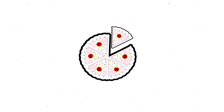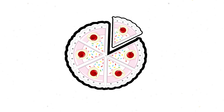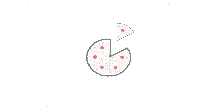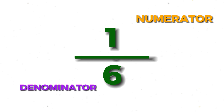Let's practice with different numbers. This cake has been divided into six, and one piece is selected. How do we write the fraction? We write the denominator, which is six, because the cake has been divided into six pieces. Then we write the numerator, which is one — the piece of cake that was selected.